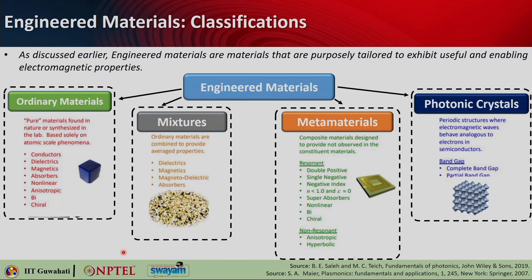This particular slide shows the different classifications of engineered materials. In this lecture, we will be mainly focusing on mixtures. Mixtures are basically made of ordinary materials which are combined together to get some averaged property. That averaged property is what we are looking for here.